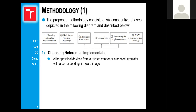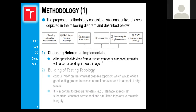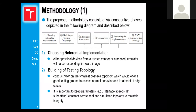Starting with the referential implementation, we have to decide on the approach and choose a vendor. Then we build a testing topology — we recommend building the smallest possible topology so you are looking at isolated events and don't have to deal with large amounts of traffic. It is also important to keep parameters like protocol settings, interface configs, and IP subnetting constant across the simulation and reference configuration.